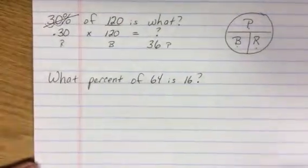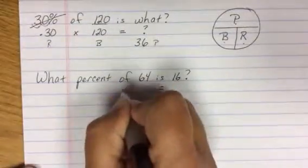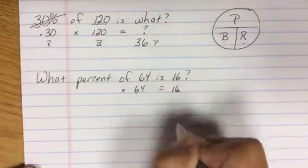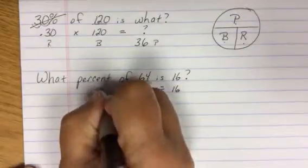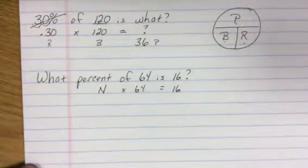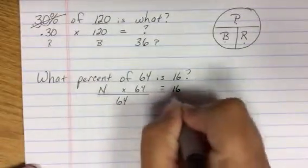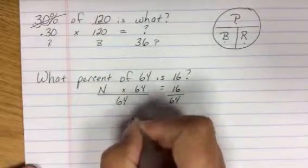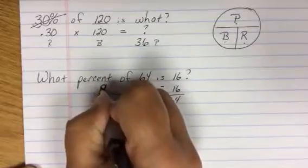What percent of 64 is 16? Is equals, of is multiplication, numbers drop. My 'what' is what I am looking for, so I am going to call it N. If I am going to solve for N, I am going to divide both sides by 64. Actually, I should call it R because it is my percentage. So let's change that to an R.